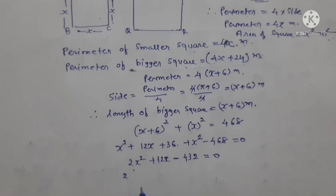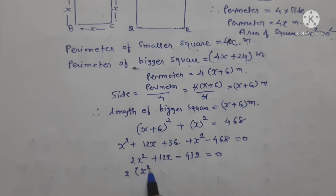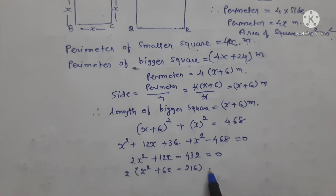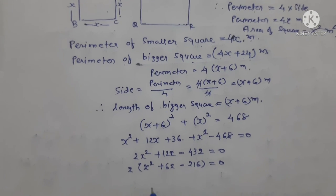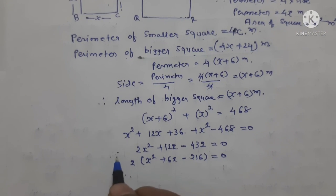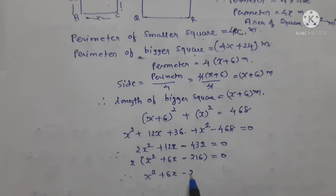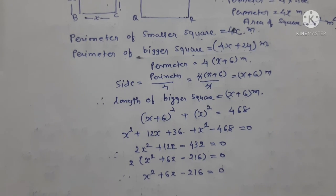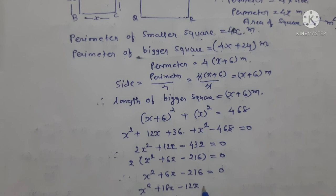Taking 2 as common gives x squared plus 6x minus 216 equals 0. Splitting 216: 18 times 12 equals 216, and 18 minus 12 equals 6. So x squared plus 18x minus 12x minus 216 equals 0. Taking x common: x(x plus 18) minus 12(x plus 18) equals 0. Therefore (x plus 18)(x minus 12) equals 0.